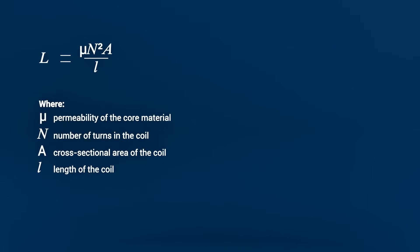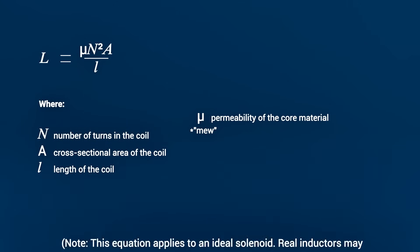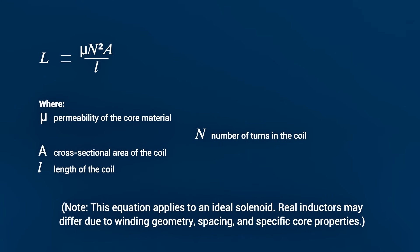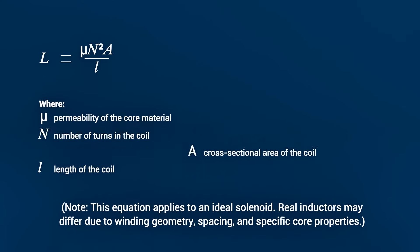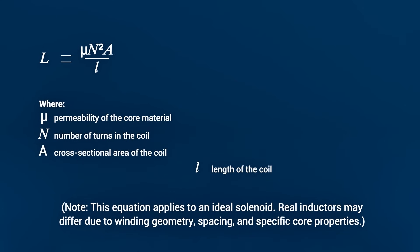This is shown in the following equation, where μ equals permeability of the core material, n equals number of turns in the coil, a equals cross-sectional area of the coil, l equals length of the coil.